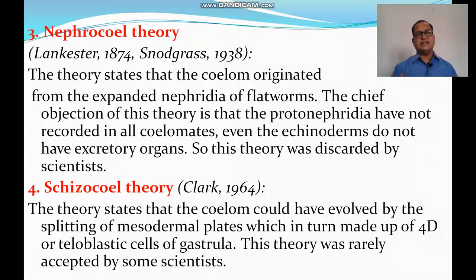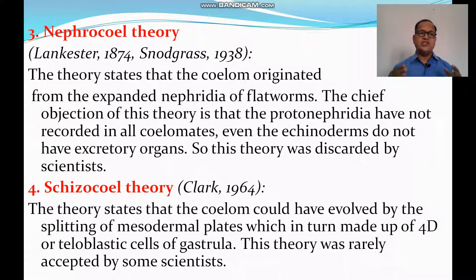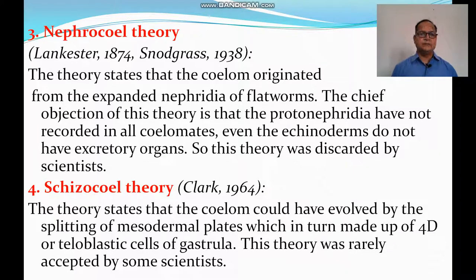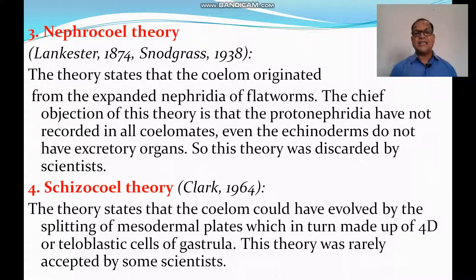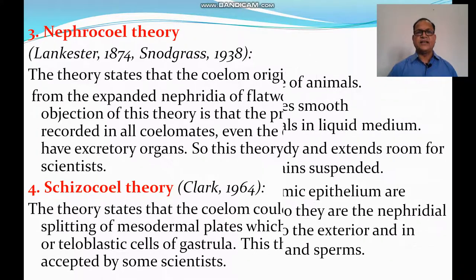The third is the Nephrocoel theory, proposed by Lankester and Snodgrass, stating that the coelom originated from expanded nephridia of flatworms. The chief objection is that protonephridia have not been recorded in all coelomates — even echinoderms do not have excretory organs — so this theory was discarded. The fourth is the Schizocoel theory, given by Clark in 1964, which states that the coelom could have evolved by splitting of mesodermal plates made up of 4D or teloblastic cells of the gastrula. This theory was rarely accepted by scientists.